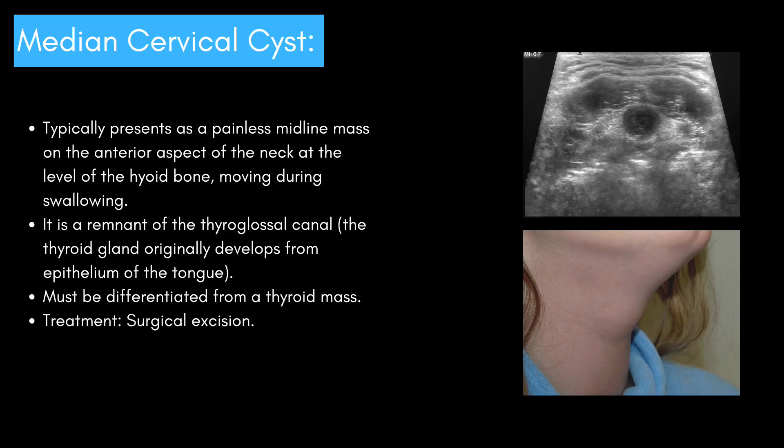Let's next take a look at the median cervical cyst. It typically presents as a painless midline mass on the anterior aspect of the neck at the level of the hyoid bone, moving during swallowing. It is a remnant of the thyroglossal canal. The thyroid gland originally develops from epithelium of the tongue. It must be differentiated from a thyroid mass, and treatment is surgical excision.